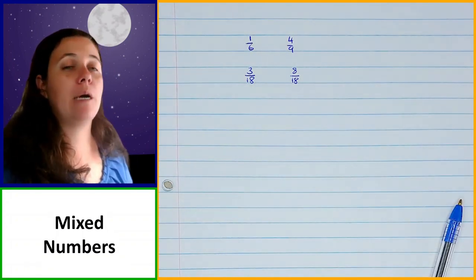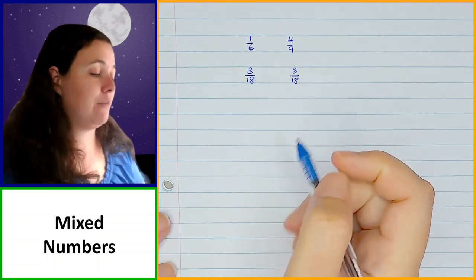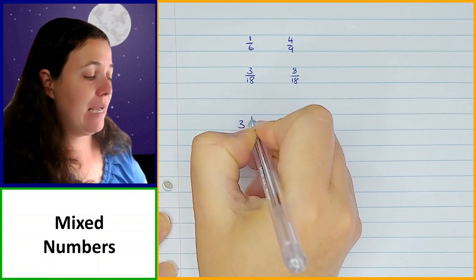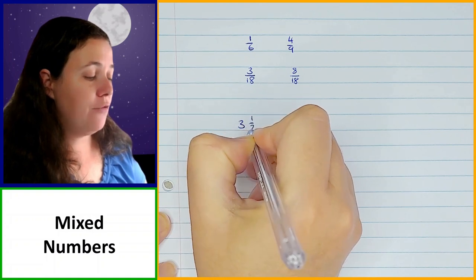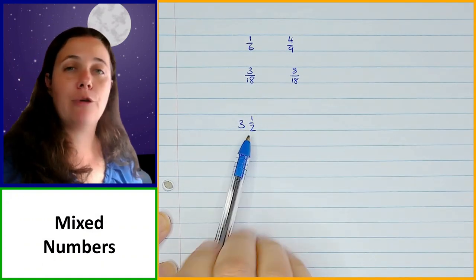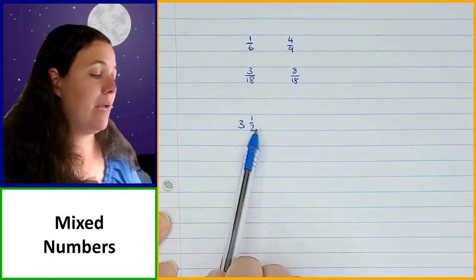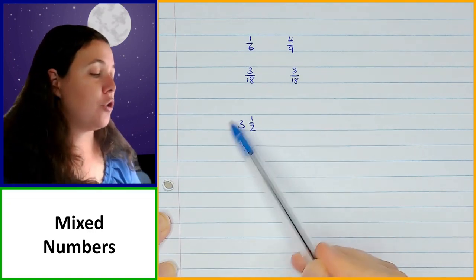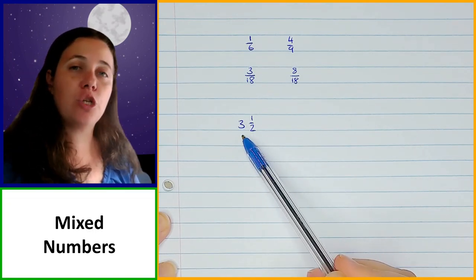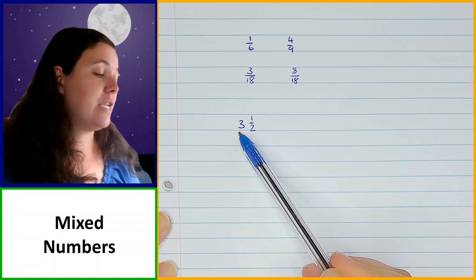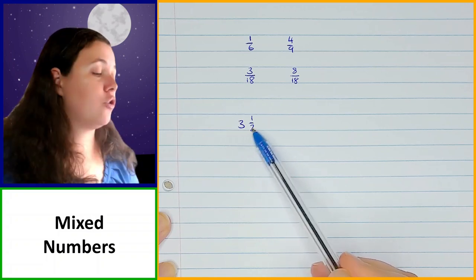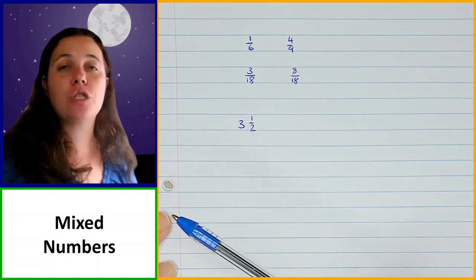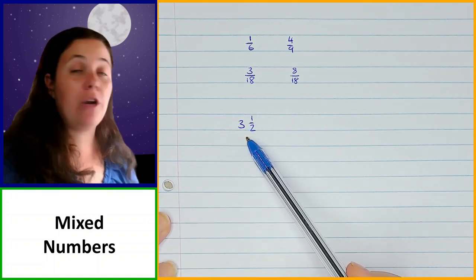The other thing I want to make sure that you're aware about is mixed numbers. A mixed number is something like this — if you have 3 and a half, this is a mixed number. A mixed number has got a whole number and a fraction together. So if you have a question where you've been given mixed numbers, then it's important for you to know how to convert this to an improper fraction, because it'll be easier for you to solve it if you change it to improper fractions.